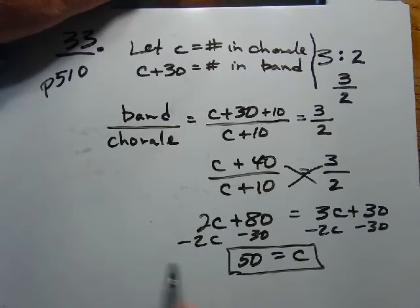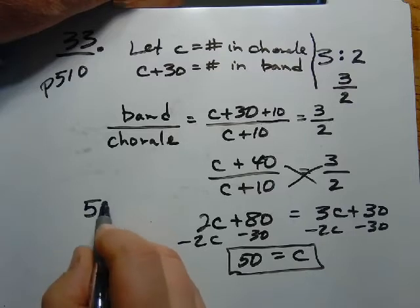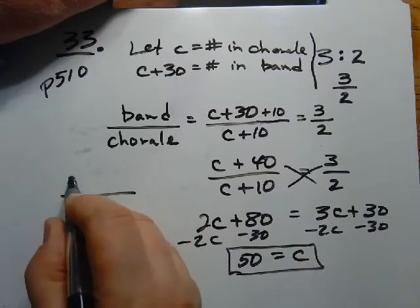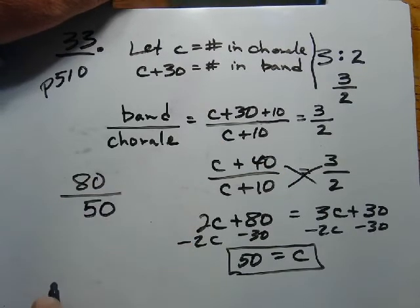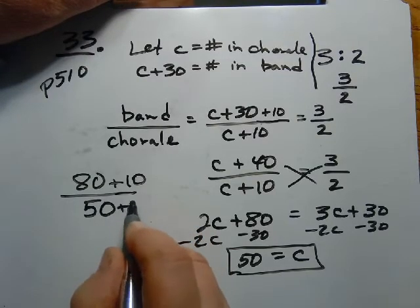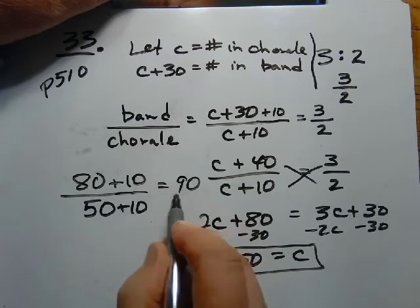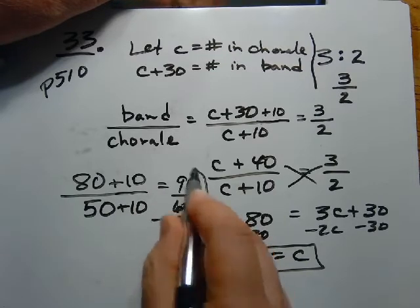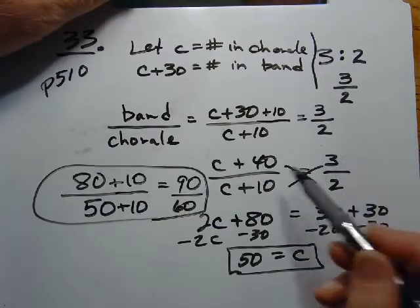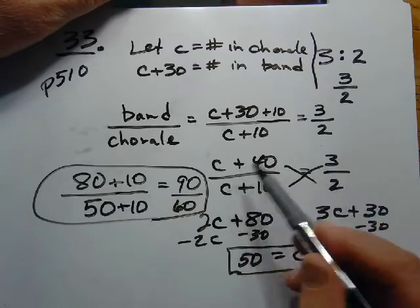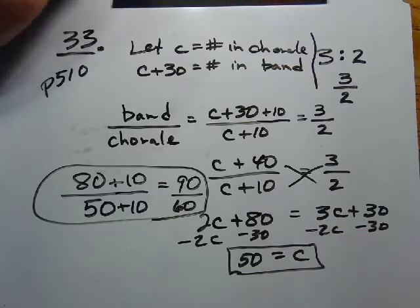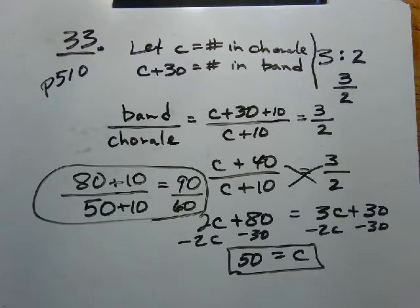Now we could get a common denominator here. But one of the things I did not mention before is that you're all familiar with solving a proportion. When there's a single fraction on both sides of an equal sign, you can cross multiply. So 2 times C plus 40 is 2C plus 80. And 3 times C plus 10 is 3C plus 30. Then we'll go ahead and solve this. Subtracting 2C from both sides. And let's subtract 30 from both sides. I end up with 50 equals C. So we find out that the chorale originally had 50 members. Let's just test this out. If the chorale had 50 and the band had 30 more than that, the band would have had 80 altogether. The band to the chorale ratio, if we add 10 more people in each group, that gives us 90 over 60. That's true. That's a 3 to 2 ratio.